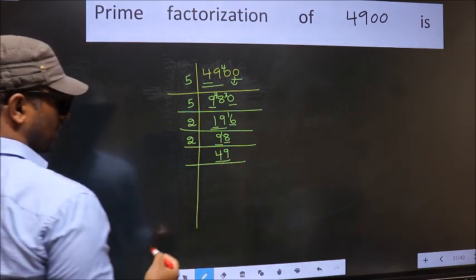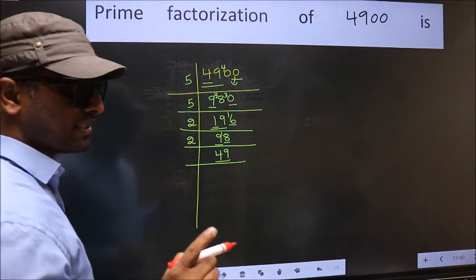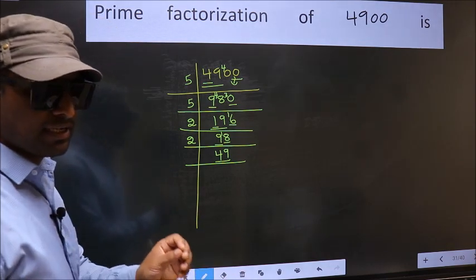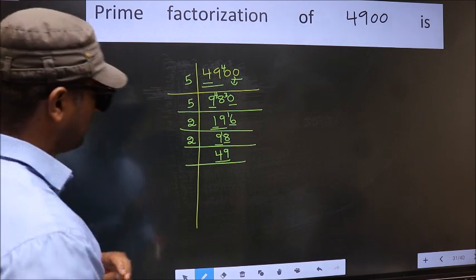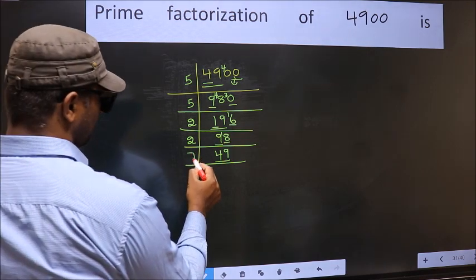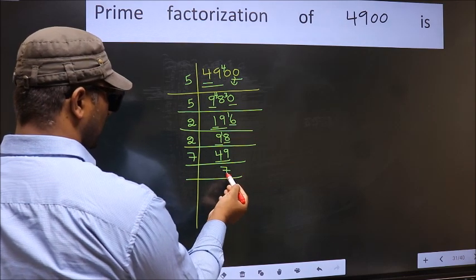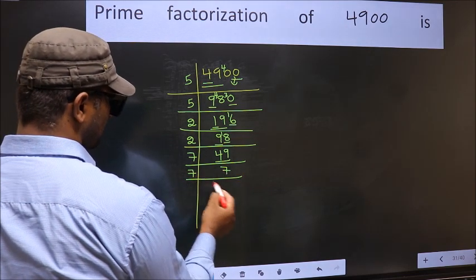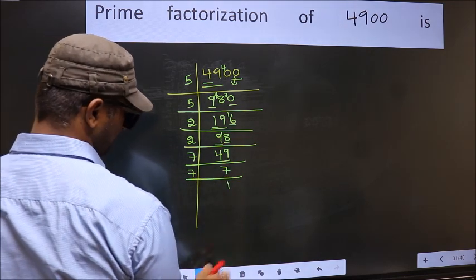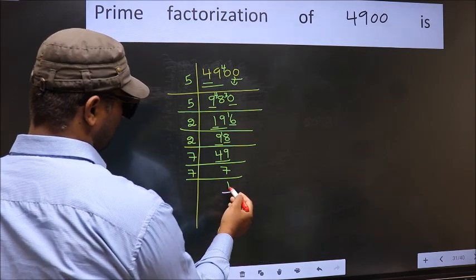Now we have 49. Always remember, 7 times 7 is 49. Now we have 7, which is a prime number. So 7 divided by 1 is 7, and we got 1 here.